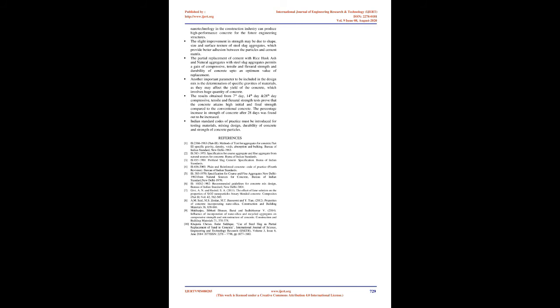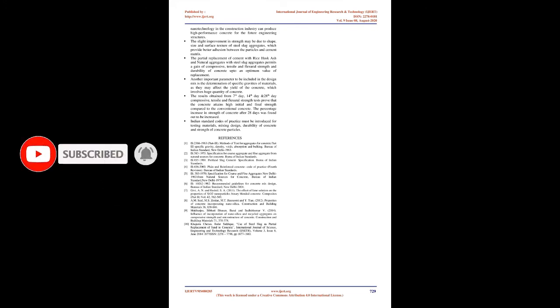5. Conclusions: The present investigation was to find the effectiveness of materials such as rice husk ash and steel slag as partial replacements in concrete. Experimental study was carried out to find parameters such as strength and durability of concrete. Using nanomaterials such as nanosilica in concrete improves hardened properties and durability characteristics, and reduces workability which can be adjusted by adding super plasticizer. By using nanotechnology in the construction industry, high performance concrete can be produced for future engineering structures.